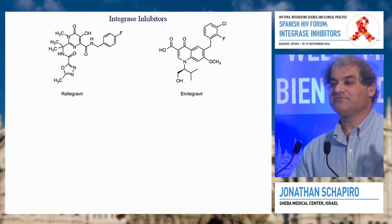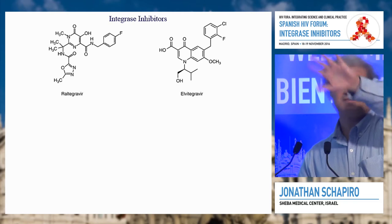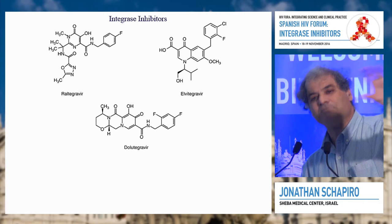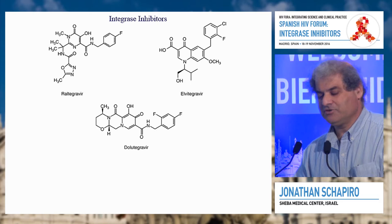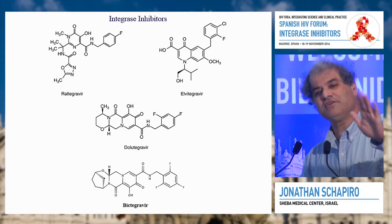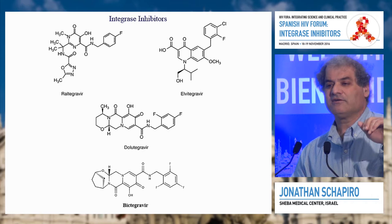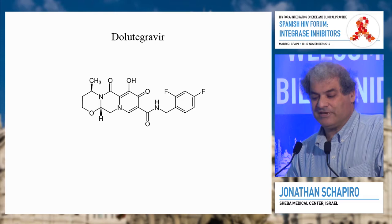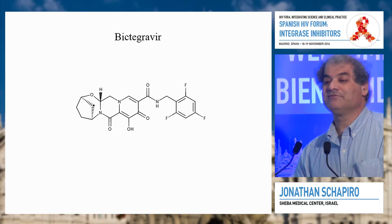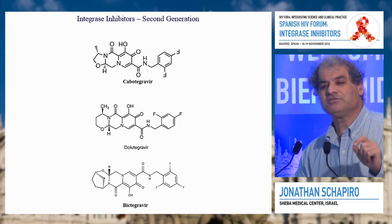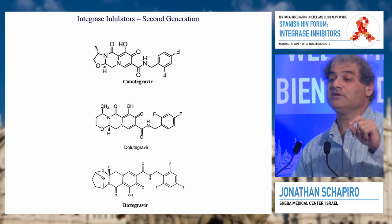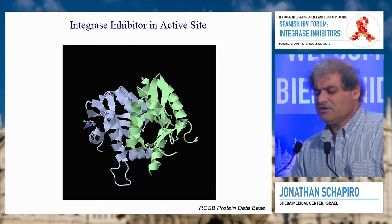This is the structure of raltegravir, this is the structure of elvitegravir — you can see they're sort of bulky molecules that stick out. And this is dolutegravir, much more streamlined. And now we have bictegravir. You can see differences in structure between our first generation, which are bulkier, and our second generation that are more streamlined. Our second-generation drugs really do have similar characteristics, which will probably result in similar resistance characteristics.